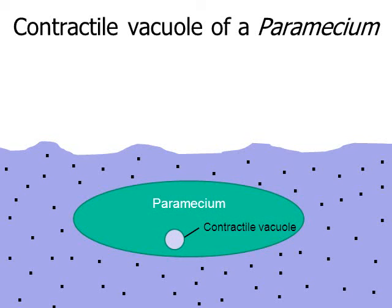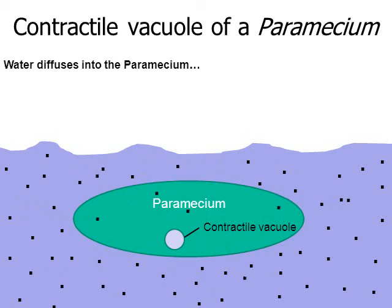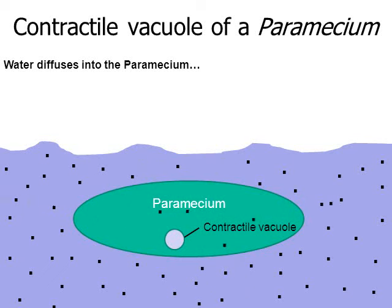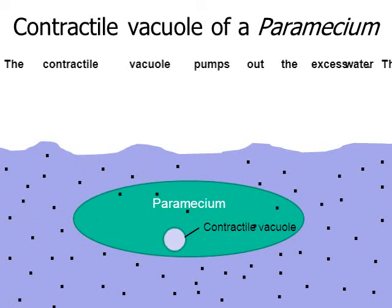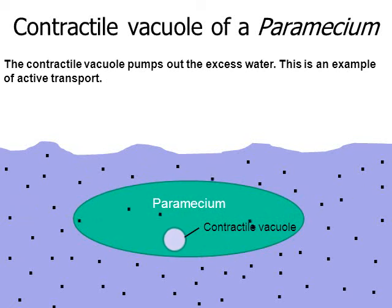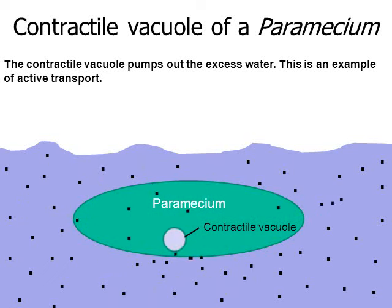Let's zoom in and look at the paramecium process. The paramecium sits in water, and water simply diffuses into the paramecium from high concentration to low concentration — the black dots in the animation represent water molecules diffusing in. The problem is the paramecium could eventually burst like a balloon inflated with too much air. To prevent bursting, the paramecium has a contractile vacuole which pumps out the excess water that diffused in. This pump requires energy in the form of ATP — a great example of active transport.